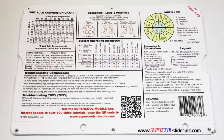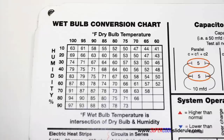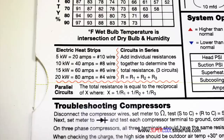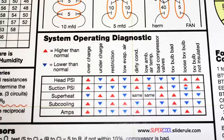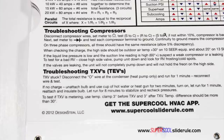It has capacitor rules and practices, a wet bulb conversion chart, how to perform computations on series or parallel circuits, an electric heat strip guide, a complete system troubleshooting diagnostic chart, and how to troubleshoot compressors and TXV.